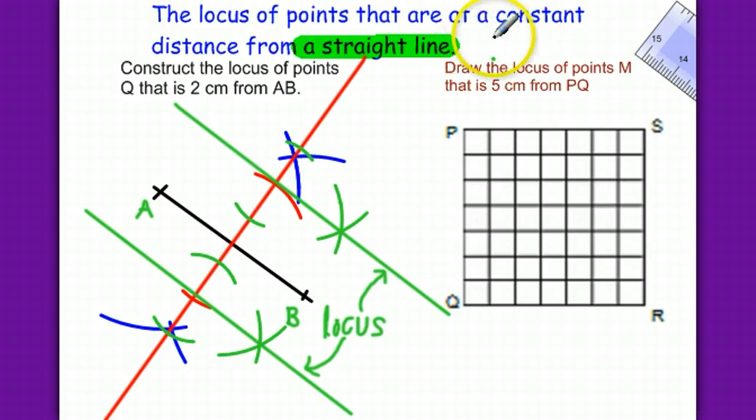The second question is, draw the locus of points M that is 5cm from PQ. Now this is PQ, right? We know that the locus is a parallel line which is 5cm from this PQ line. So it's 1, 2, 3, 4, and 5. Our locus should be here.